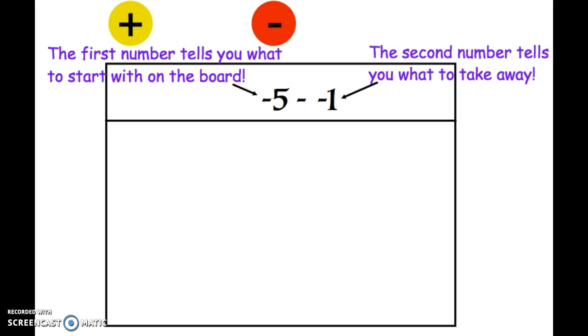We'll look at this first problem, negative 5 minus negative 1. The first number tells you what to start with on the board. The second number always tells you what to take away to arrive at your final result.